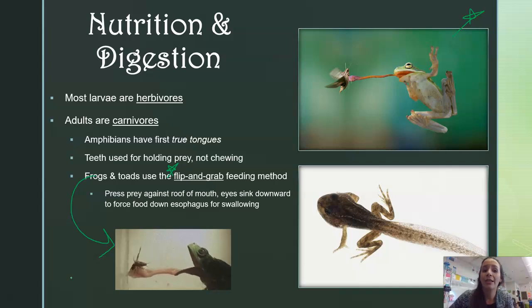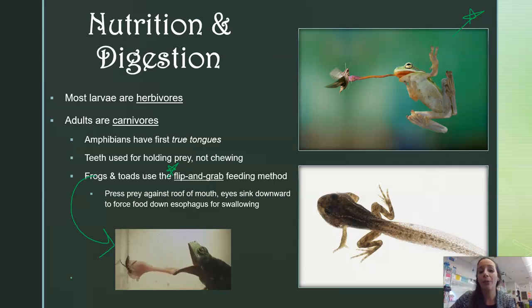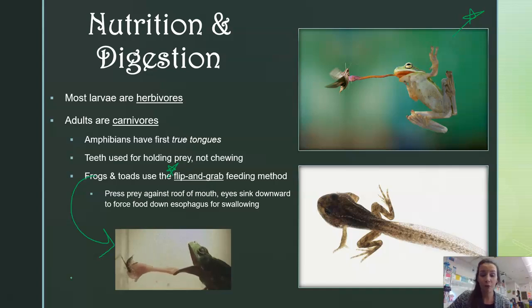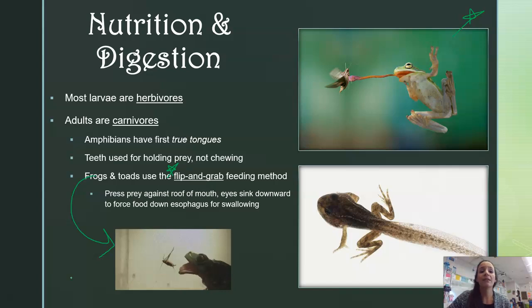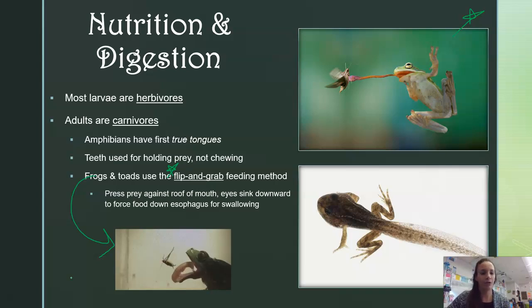When we talk about nutrition and digestion, most of the larvae you'll see are herbivores. Tadpoles, which are typically what the larvae are, feed on algae or different plant matter. However, when they transition into adults, they become carnivores. Amphibians are also the first organisms we see with true tongues, and this enables them to do something called the flip-and-grab method of feeding that frogs and toads do, or just to grab their prey like salamanders might.